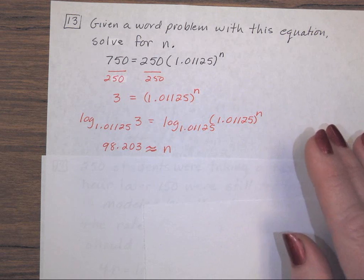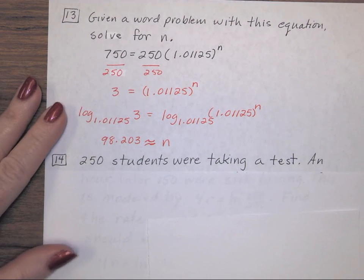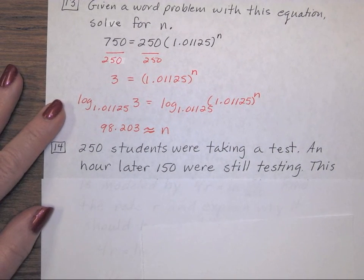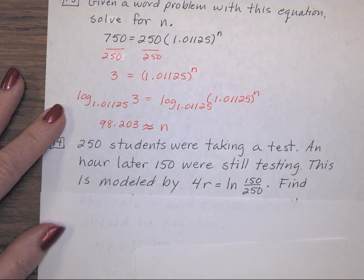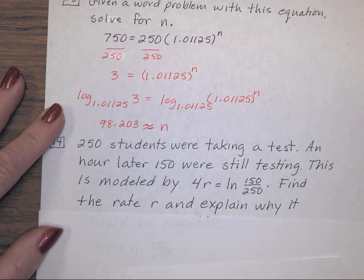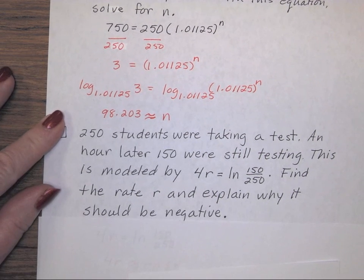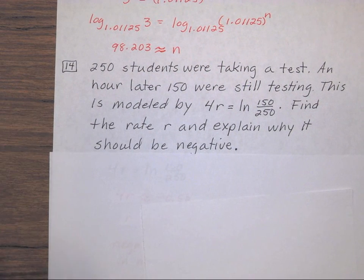The next one is very similar, but they wrote out the word problem for you. You have 250 students that were taking a test. An hour later, 150 were still testing. This is modeled by, so notice you didn't have to write the equation, they're giving you the equation, for r equals the natural log of 150 over 250. They want you to find the rate, r, so they want you to solve for r, and explain why it should be negative. So there's two parts. First, find the answer, but then explain why it's negative.